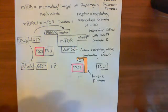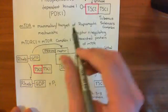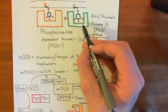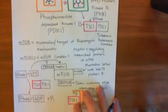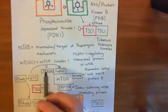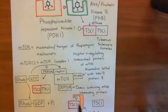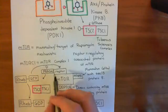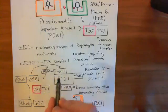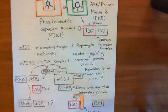Another way that protein kinase B activates mTORC1 is that it also phosphorylates the PRAS40 protein. When PRAS40 gets phosphorylated, it cleaves off from mTORC1 — specifically, it cleaves off Raptor. PRAS40 was stopping Raptor from being able to interact with its substrates, so by removing PRAS40, you activate mTORC1.